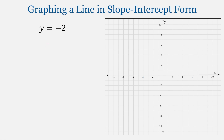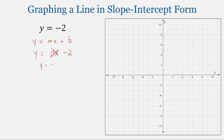Now one more: y equals negative 2. Is this in slope-intercept form? We have y equals mx plus b. We do have y with a coefficient of 1 on one side, and the constant negative 2. But what about the x term? We do have an x term, but in this case the coefficient is 0. When we multiply anything by 0 it disappears, so 0 times x goes away, leaving us with negative 2.